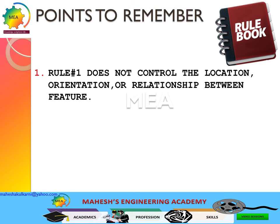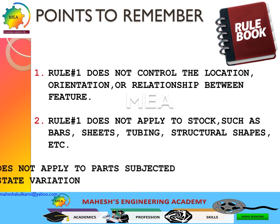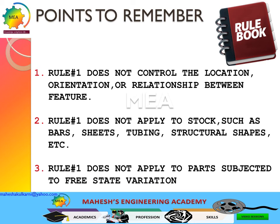Points to remember: Rule Number One does not control location, orientation, or relationship between features. Rule Number One does not apply to stock items such as bars, sheets, tubing, and structural shapes. Rule Number One also does not apply to parts subjected to free state variation — that means flexible parts.